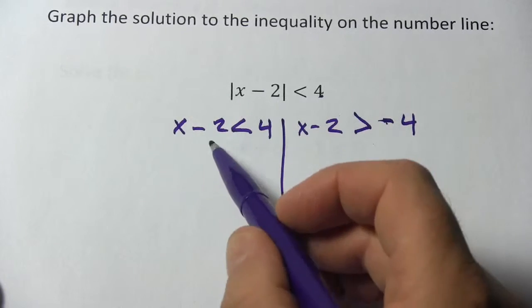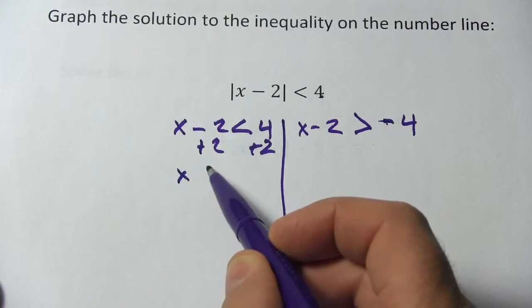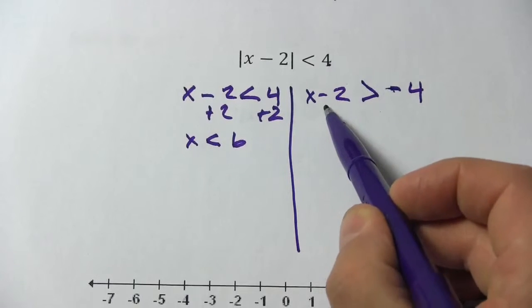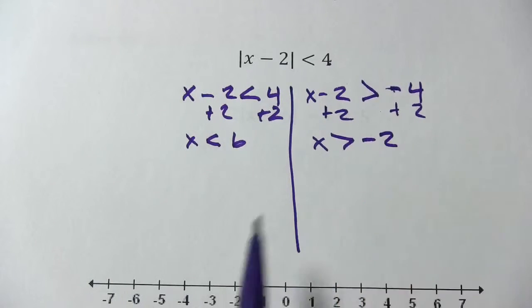Now we can go ahead and solve both of these. I'm going to add 2 to both sides here, and I get x is less than 6. And over here, we're going to add 2. We get x is greater than negative 2.